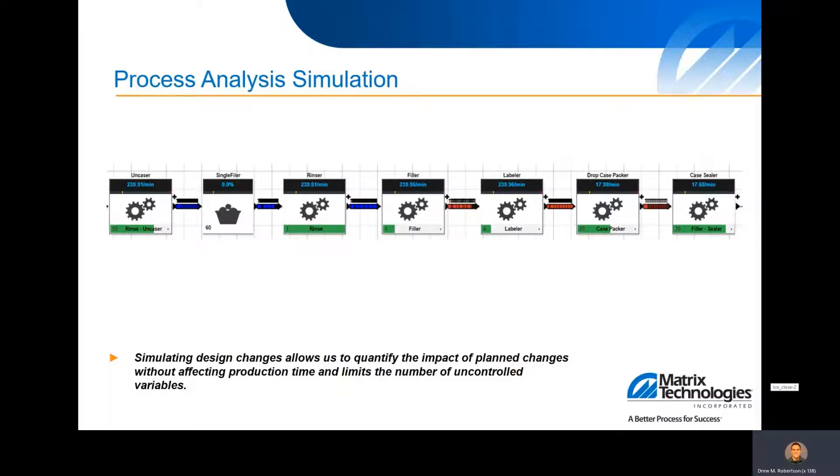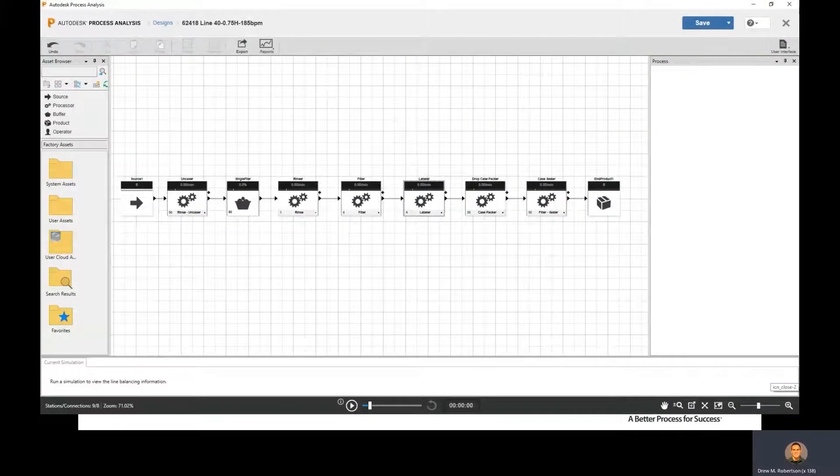So now that we have the TRACSIS downtime data and we have an overview of our equipment and how they flow together, we can hop into the simulation and we can change a few variables in there to quantify the impact of some of our planned changes and see how those will affect the overall case count. And we don't have to do that on site while they're trying to make product, and we don't really want to be affecting their daily rates with that testing.